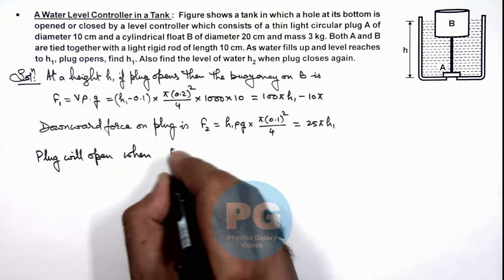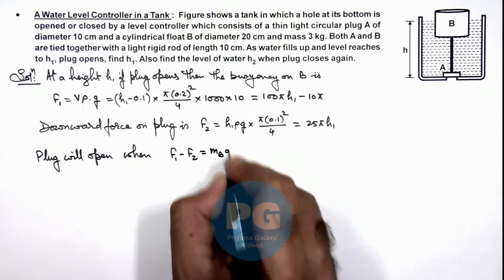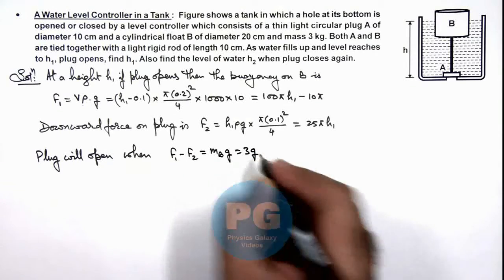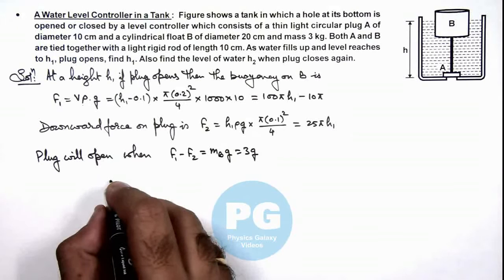When the net upward force F₁ minus F₂ will be equal to mass of B into g, that is equal to 3g as the plug is light weight. Substituting the two values here gives us